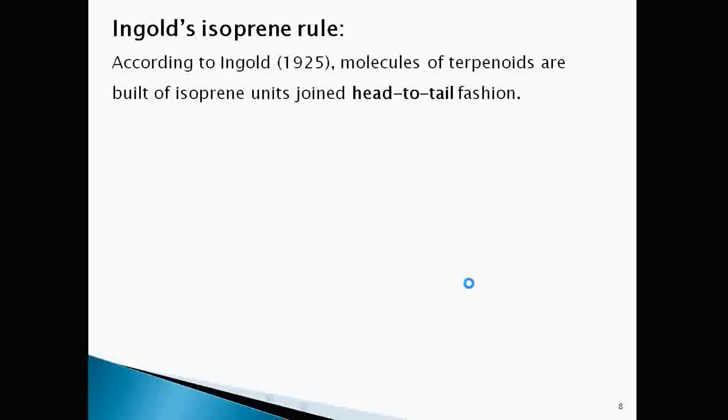In 1925 Ingold gave some rule that how isoprene units are joined in terpenes. According to him molecules of terpenoids are built of isoprene units joined head to tail fashion and this is called Ingold's isoprene rule.